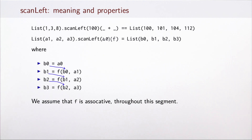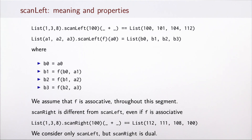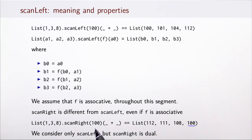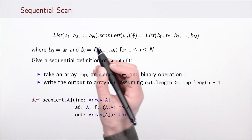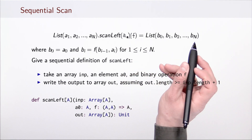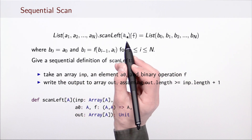Throughout this segment, we will assume that operation f is associative. Even so, there exists a dual operation scan right, which is different from scan left. For example, if we take the same list 1, 3, 8 and apply scan right with initial element 100 and the associative operation of addition, the last element of the result equals the given initial element, and each previous element is obtained by adding the element at the corresponding position. When we have a list of n elements, scanning produces a list of n+1 elements indexed from 0 to n.